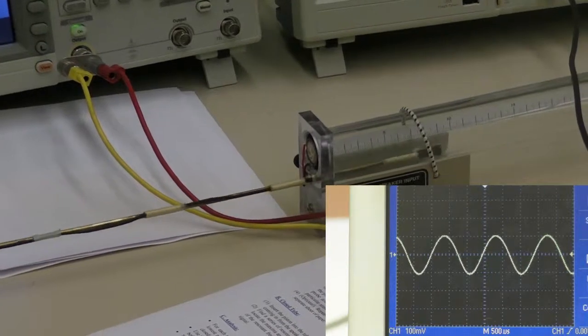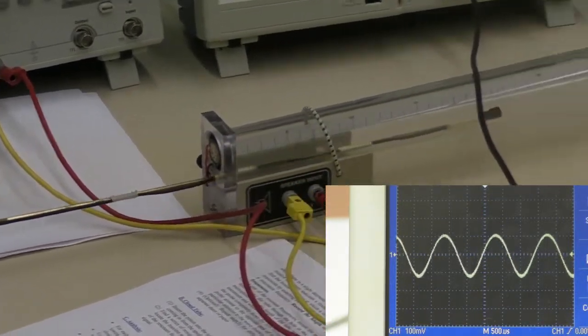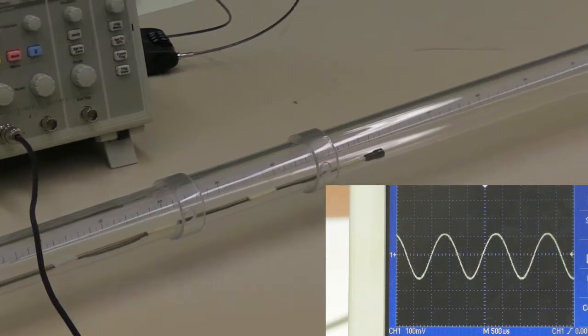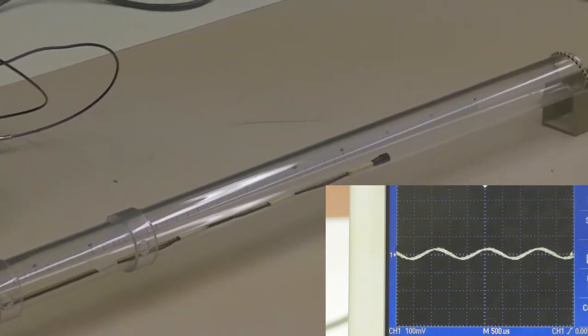After recording the resonant frequencies, record the positions of the maxima and minima. As you can see, the amplitude of the wave changes as you slide the microphone down the tube.